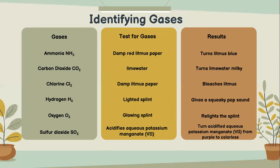Identifying gases. For ammonia: test using damp red litmus paper — turns litmus blue. For carbon dioxide: test using limewater — turns limewater milky. For chlorine: test using damp litmus paper — bleaches the litmus. For hydrogen: test using a lighted splint — gives a squeaky pop sound. For oxygen: test using a glowing splint — relights the splint. For sulfur dioxide SO2: test using acidified aqueous potassium manganate(VII) — turns from purple to colourless.